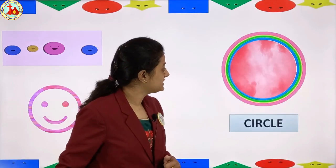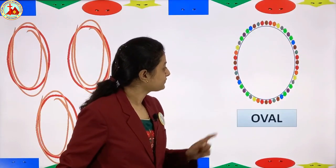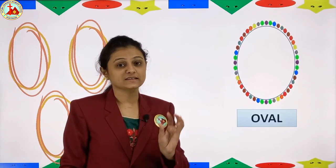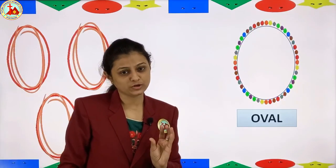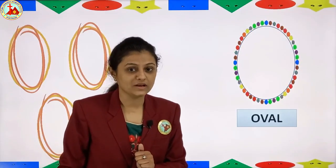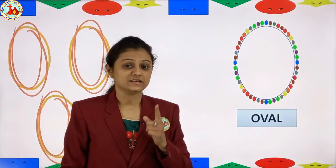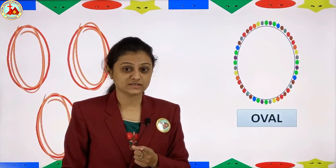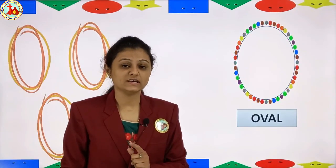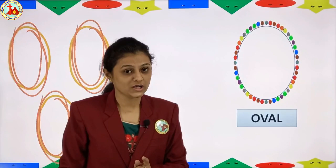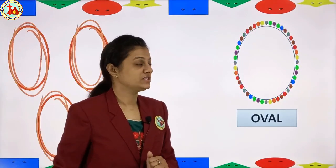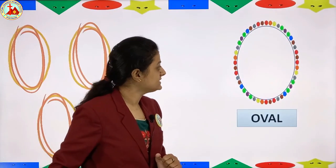Next, which shape is there? Oval. If you take a circle and pull it a little long, it becomes oval. The soccer ball and eggs are oval in shape.